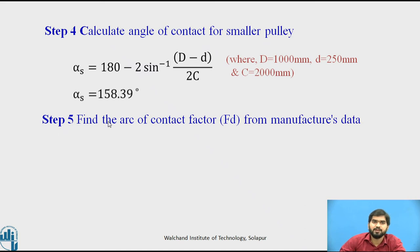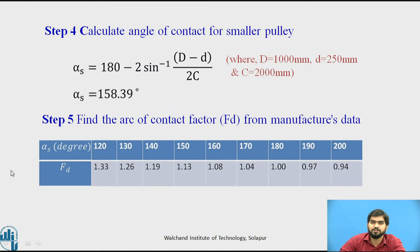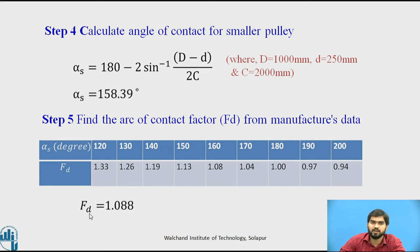Step 5: Find the arc of contact factor Fd from the manufacturing data book. From the table, alpha_s = 158.39 degrees falls between 150 degrees (Fd = 1.13) and 160 degrees (Fd = 1.08). Applying the interpolation formula at 158.39 degrees, we get Fd = 1.088.